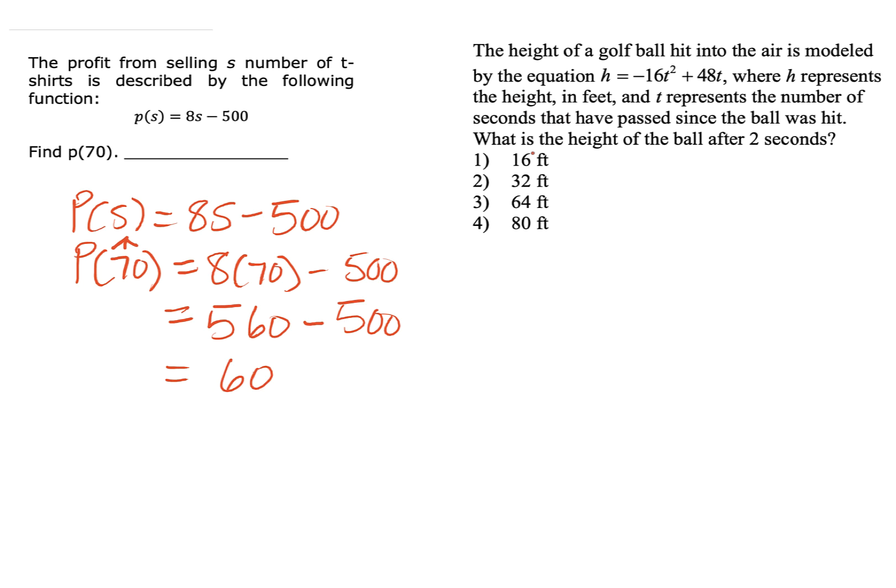This problem over here is quite lengthy. The height of a golf ball hit into the air is modeled by the equation. There's our equation. Let's write it. H equals negative 16t squared plus 48t. Where H represents the height in feet. And T represents the number of seconds that have passed since the ball was hit. They want to know what is the height. We're finding H of the ball after 2 seconds. This 2 seconds is our T. Wherever we see T in our equation, we're going to replace it by 2. So this will be negative 16. This will be 2 squared plus 48 times 2.